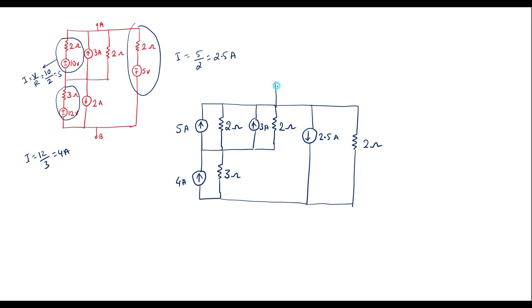This voltage source is replaced by a 2.5 amp current source. The direction of the arrow mark is down because this end is positive and this is negative. This is 2.5 amp, and this 2 ohm is connected in parallel with this. This is terminal A and this is terminal B. Now we can observe that 5 amp, 2 ohm, 3 amp, and 2 ohm are all in parallel.